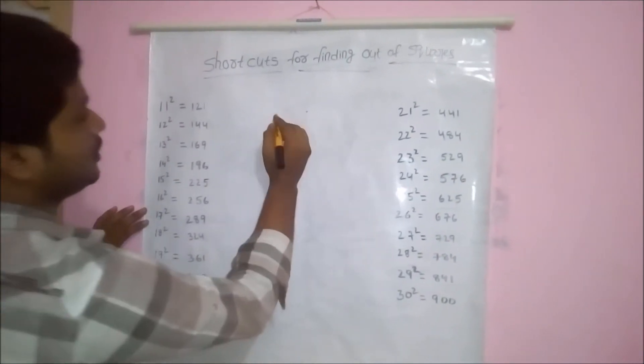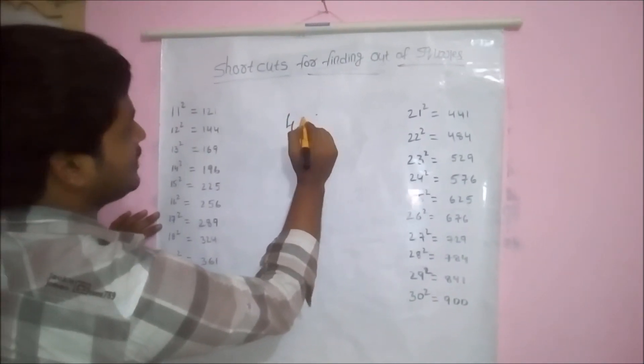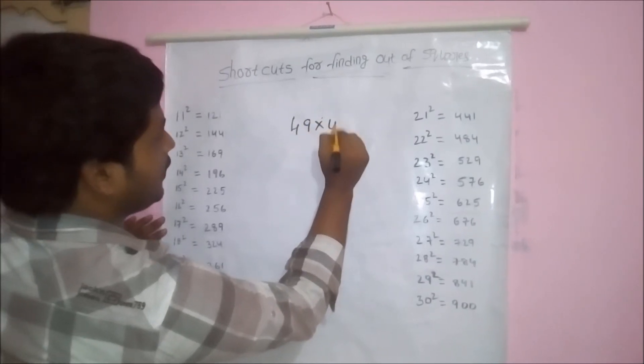First of all, we have discussed the general method. For finding out the general method, take an example: 49 into 49.